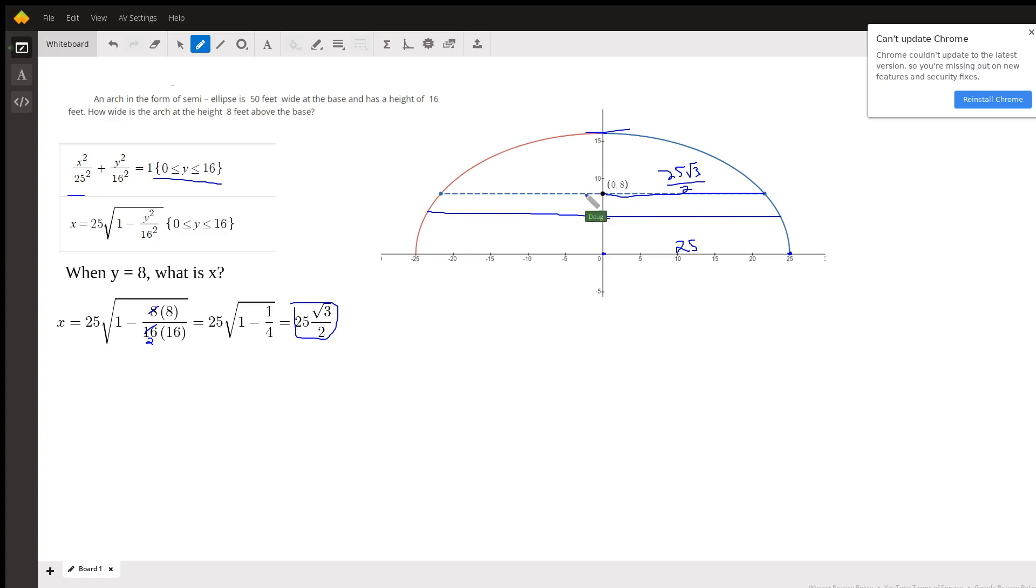So this distance right here is 25 radical 3 over 2. But so is this distance, 25 radical 3 over 2. So if I double that, I get 25 radical 3. That's your exact answer.